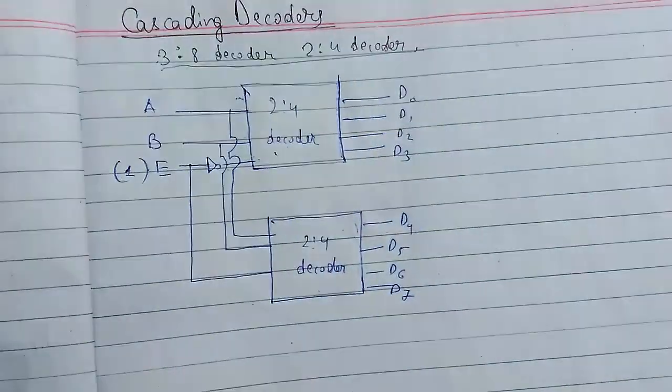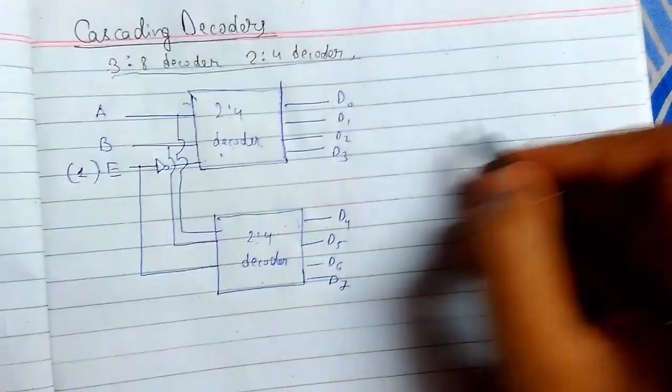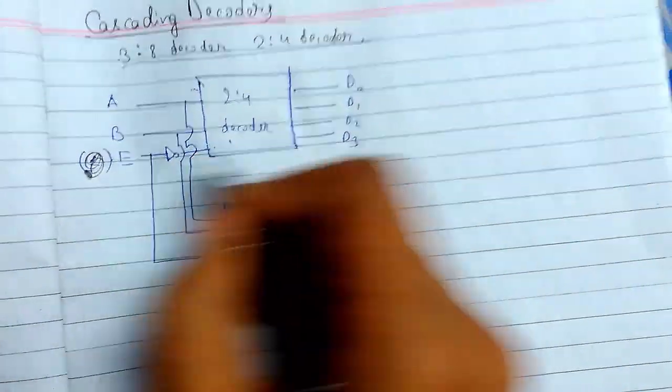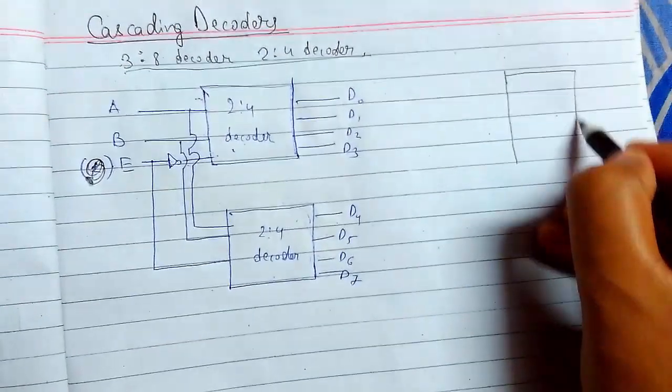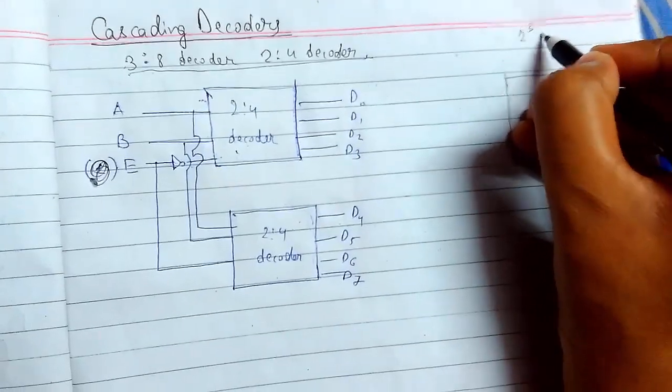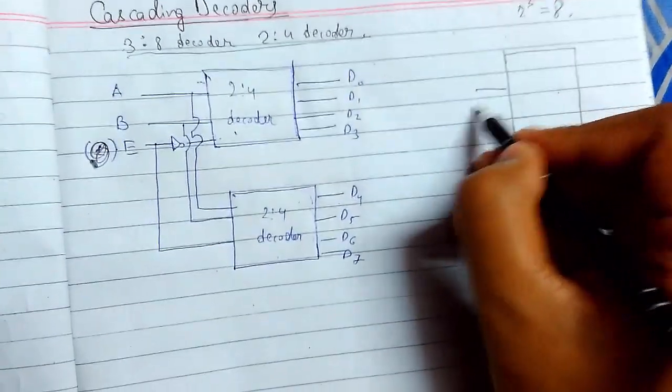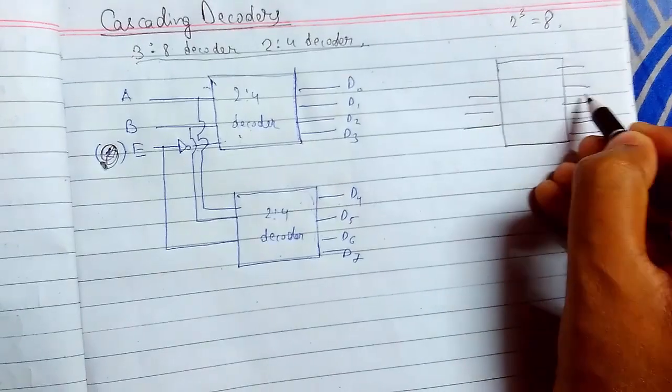This is the circuit diagram of it. Let me tell you a 3-to-8 decoder has 3 inputs and 8 outputs because 2 to the power 3 is 8. So here will be 3 inputs and here will be 8 outputs for it.